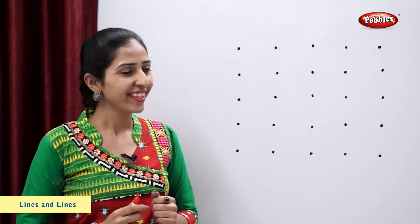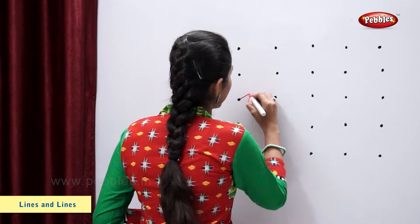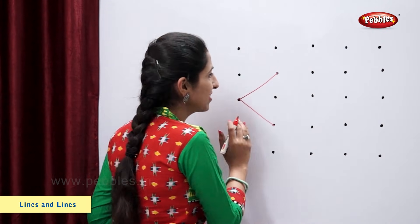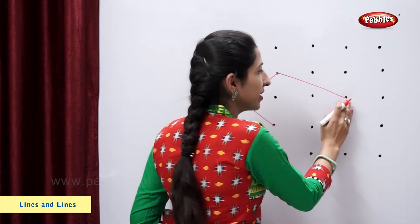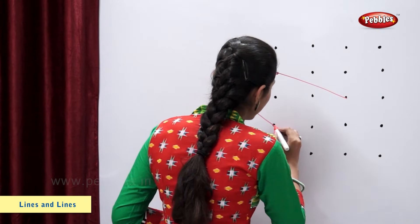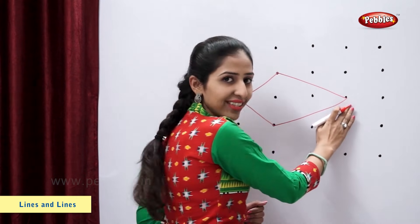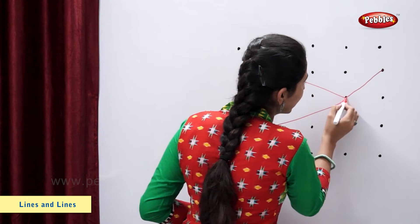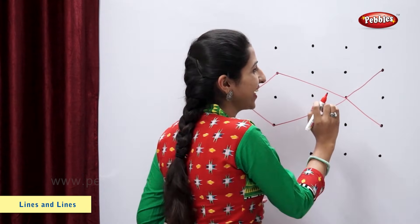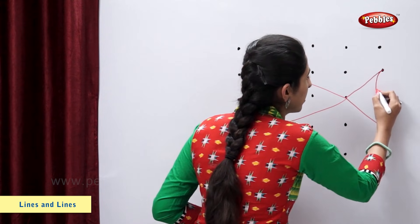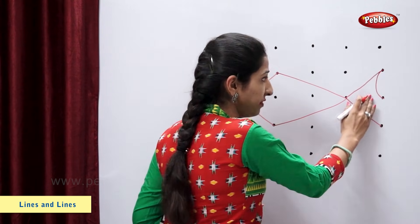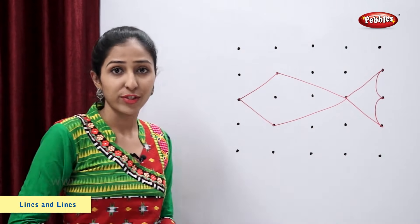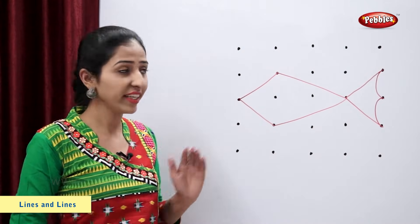Let's draw a fish. Slanting line, slanting line, slanting line, slanting line, slanting line, one more slanting line, a curve, one more curve. So, we have drawn this fish using the grid.